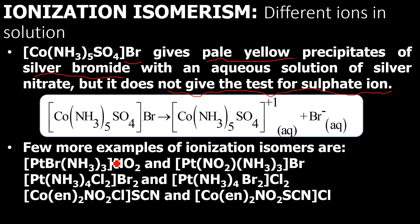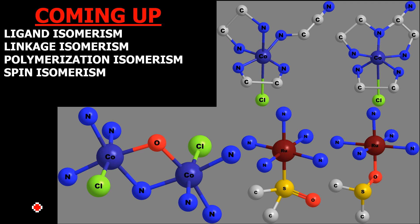There are some more examples of ionization isomers. You can have a platinum complex in which nitrite NO₂⁻ satisfies the primary valency, and in another isomer bromo or bromide satisfies the primary valency in place of nitrite. Two more similar examples are also shown. In the next lecture, we will be discussing the remaining four types of structural isomerism: ligand isomerism, linkage isomerism, polymerization isomerism, and spin isomerism.